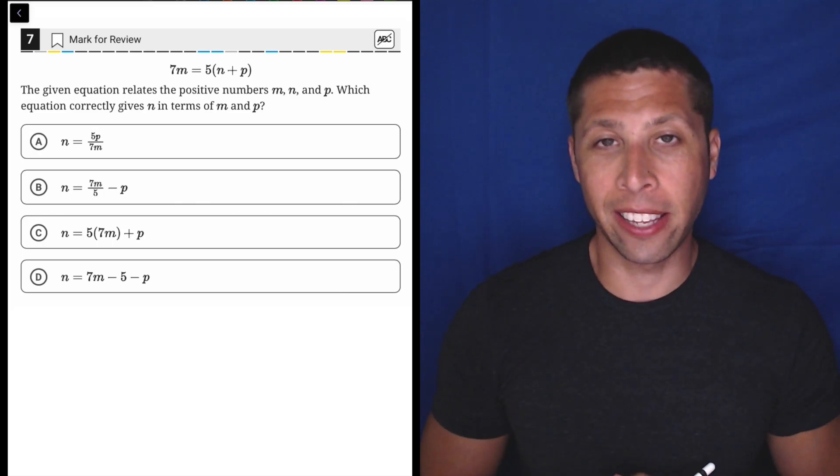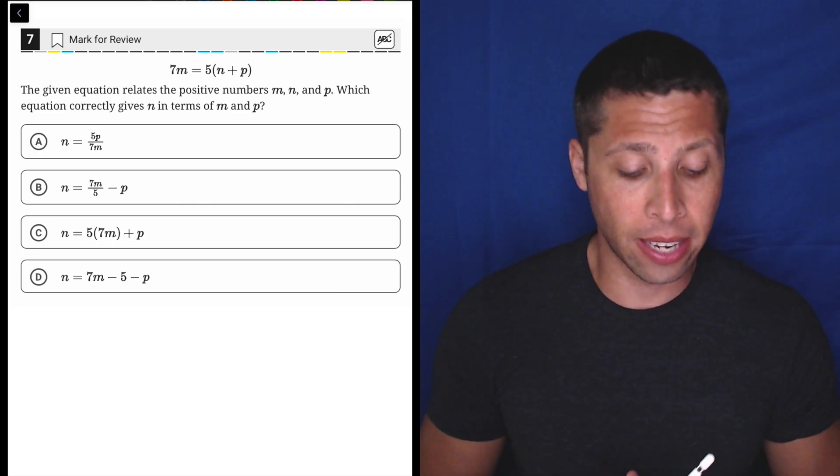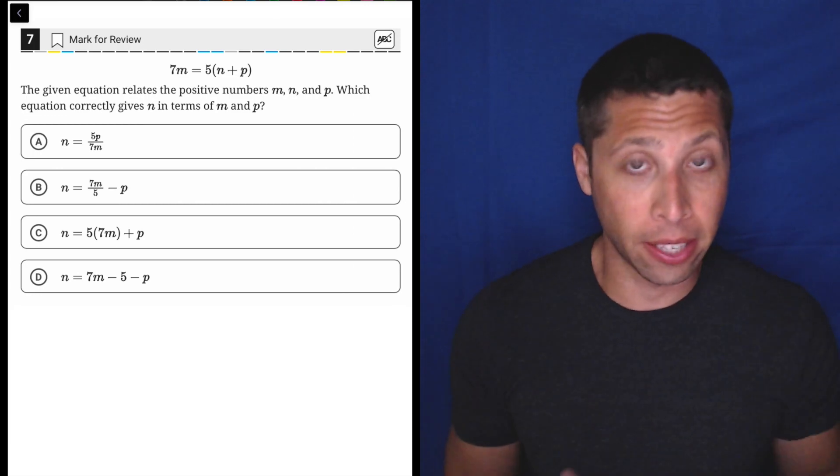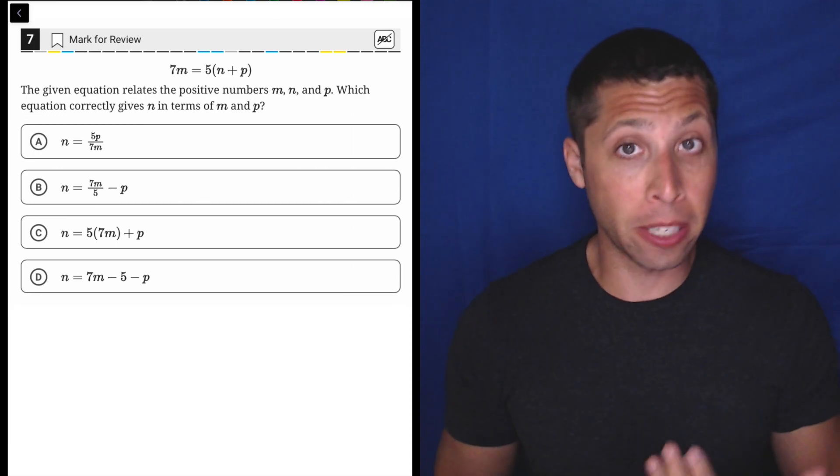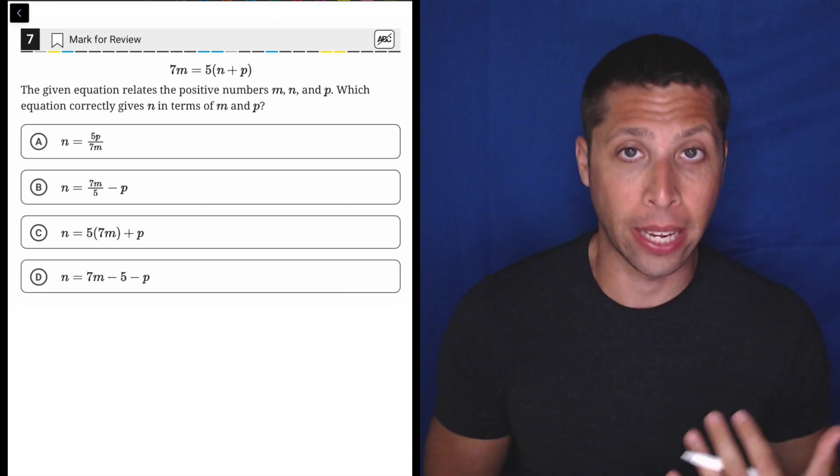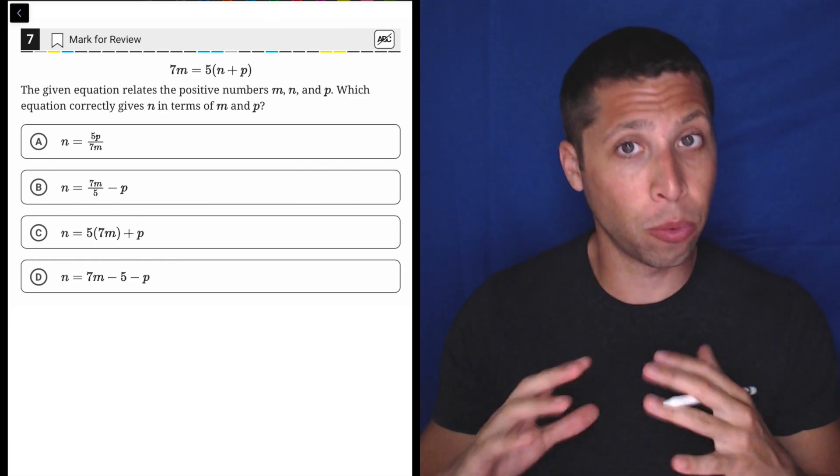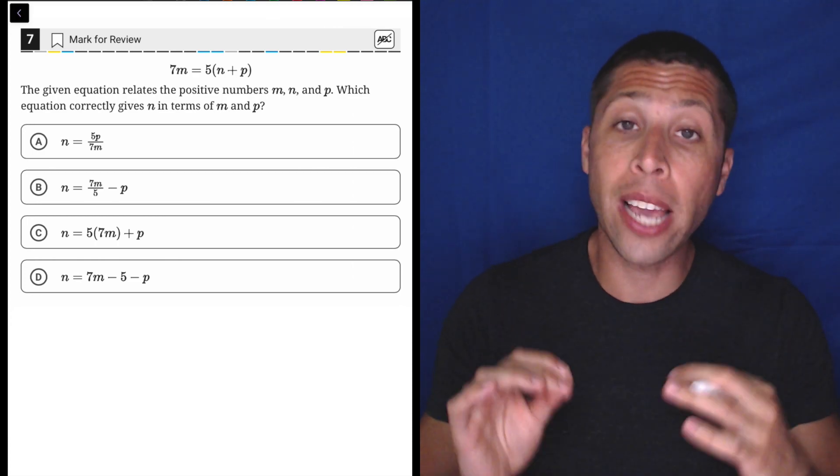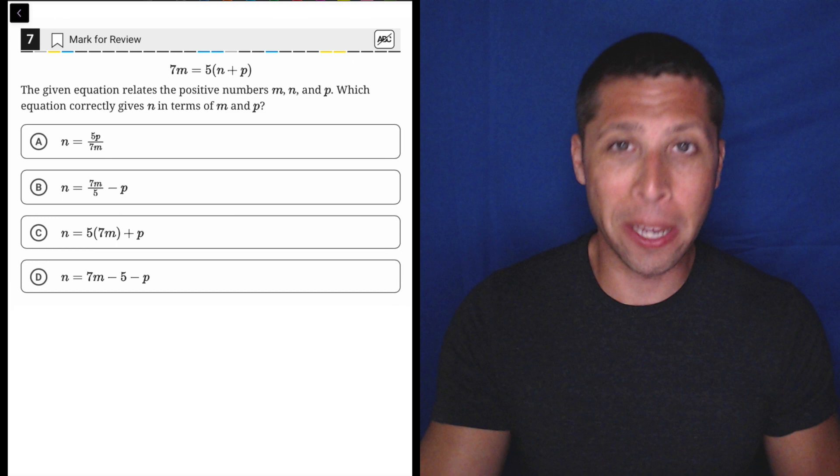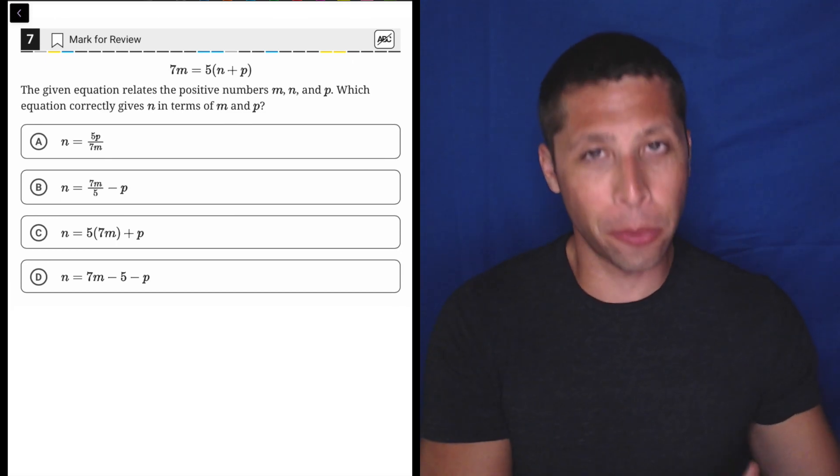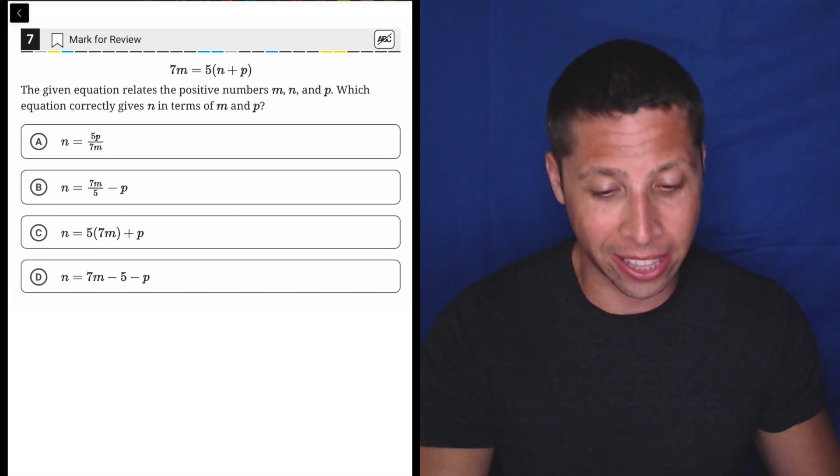We saw a question like this in the first module for this practice test, and it's definitely something the SAT likes to do. We have this three-variable equation that we have to manipulate. By far, the fastest way to do these is to just know the algebra confidently enough that you can manipulate it. I will show you another way, but we really want to get this down.